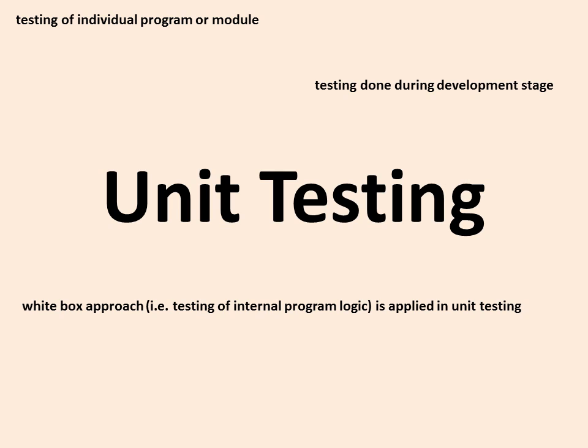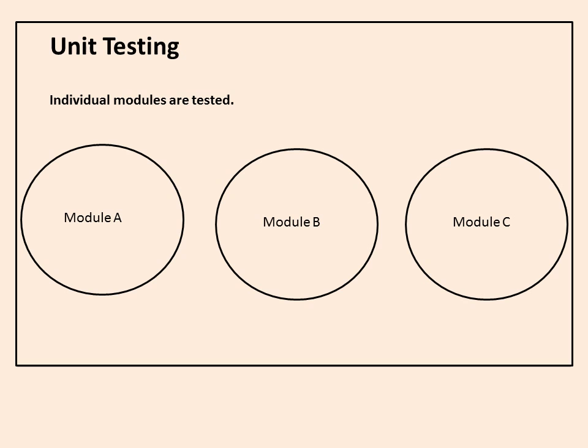In white box testing, internal program logic is being verified. Whereas in black box, only function testing is done. In unit testing, individual modules are tested — we can verify module A even if modules B and C are not yet developed.